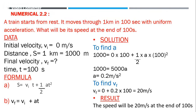Numerical 2.2: A train starts from rest — so initial velocity vi = 0 m/s. Whenever you see a sentence like 'an object starts from rest,' put vi = 0. It moves through 1 kilometer (1000 meters) in 100 seconds with uniform acceleration. Find the speed at the end of 100 seconds, i.e., final velocity vf.